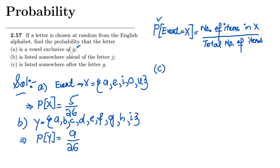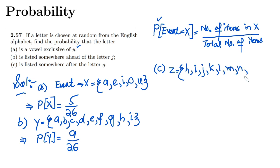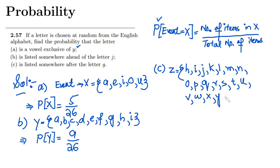Similarly, in part C we have to find the probability of the letters listed somewhere after letter G. Let me call this event Z. The set consisting of all the elements after G would be h, i, j, k, l, m, n, o, p, q, r, s, t, u, v, w, x, y, and z.